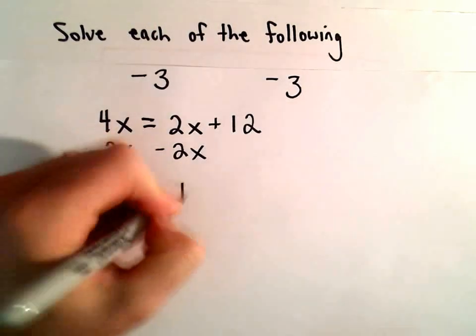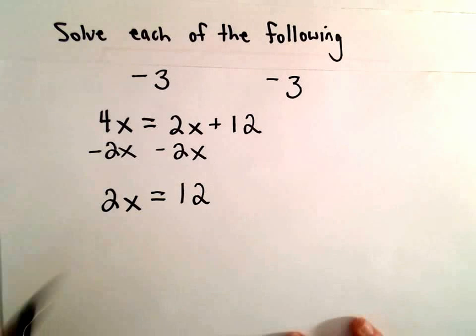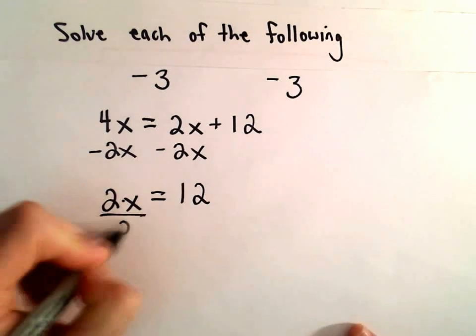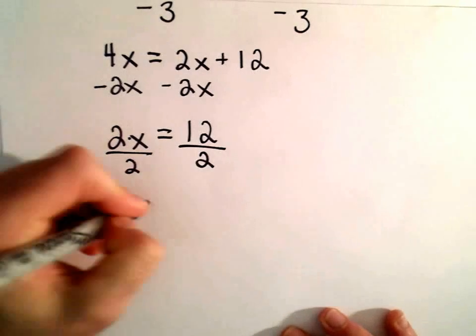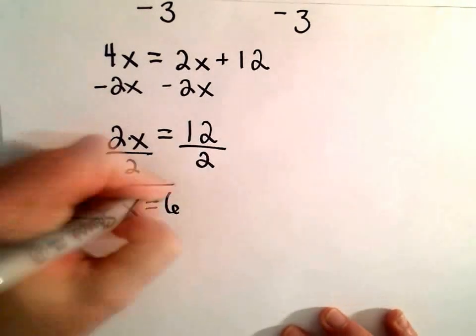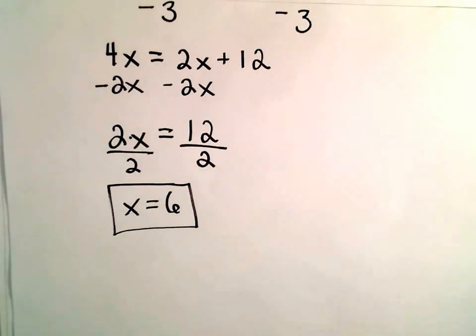On the right side, we're left with positive 12. And now since we're multiplying by 2, all we have to do is divide both sides by 2, and we'll get our solution to part A. The solution is x equals 6.